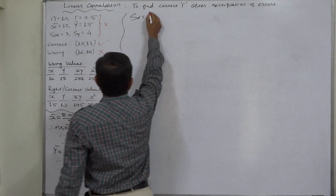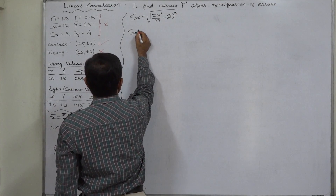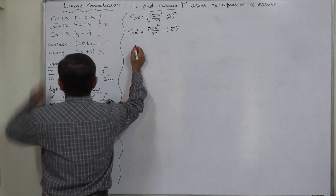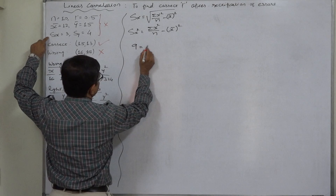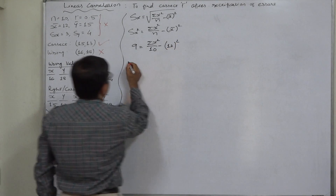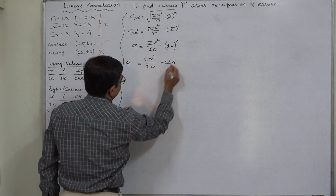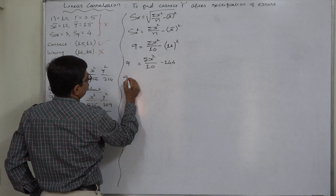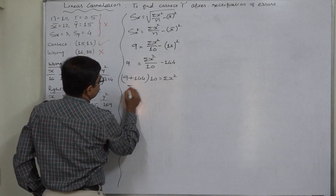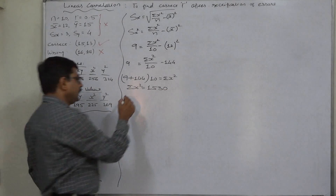One formula for the standard deviation is sx = √(Σx²/n − x̄²). Squaring both sides, the variance of x equals Σx²/n − x̄². If sx = 3, then the variance is 9. So 9 = Σx²/10 − 144, giving Σx²/10 = 153, and therefore the incorrect Σx² = 1530.